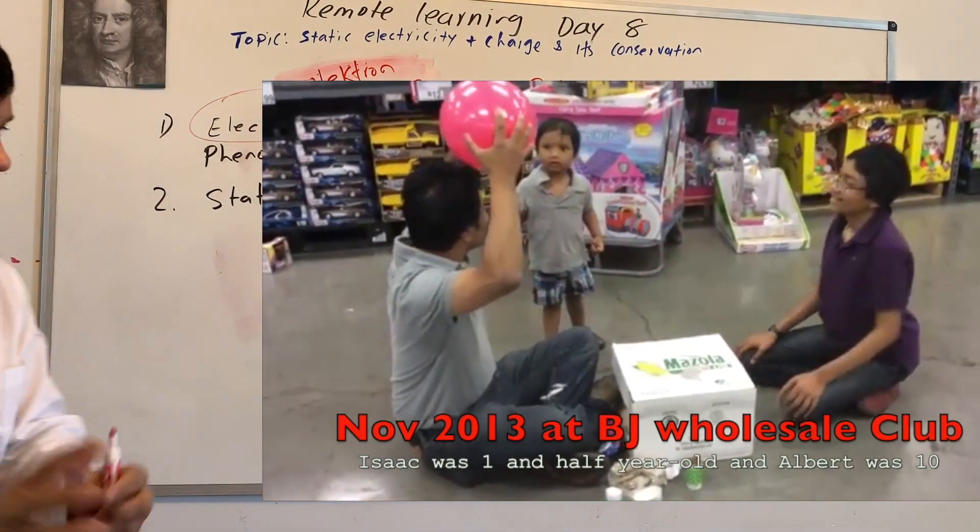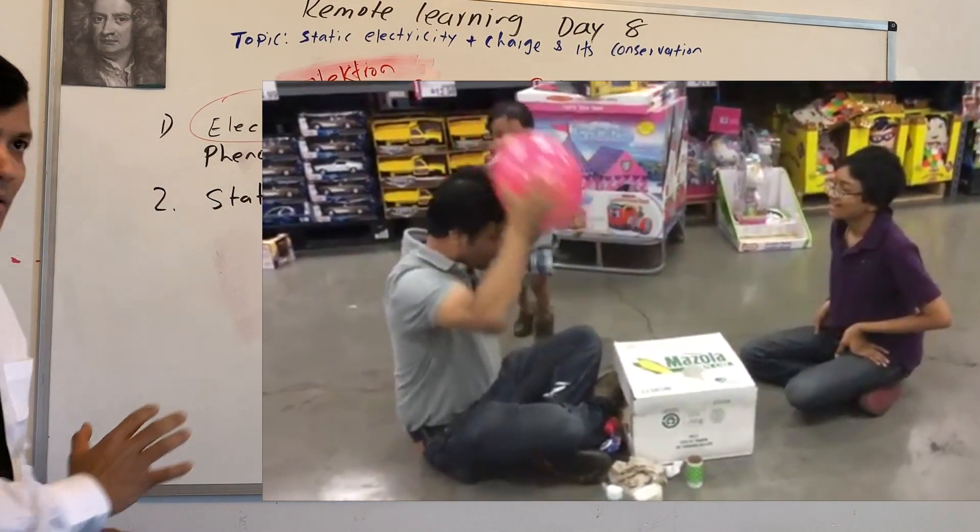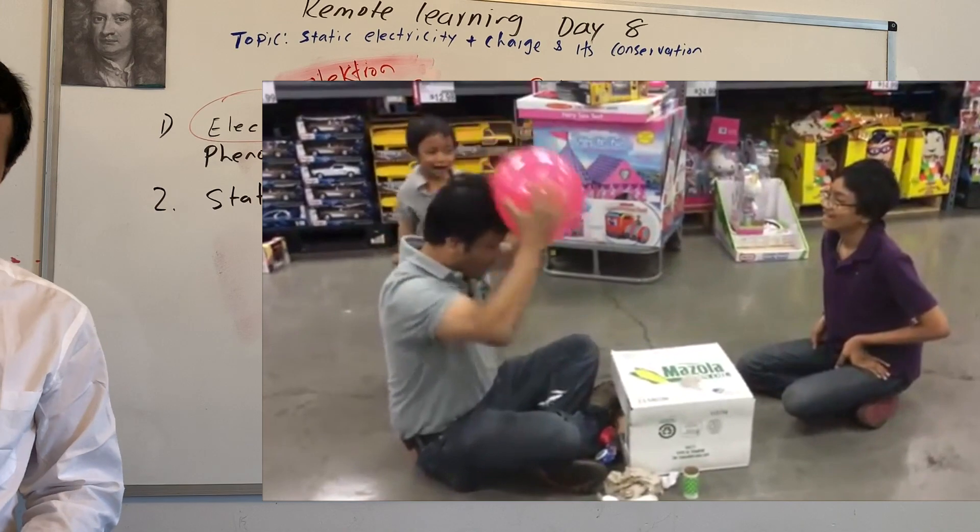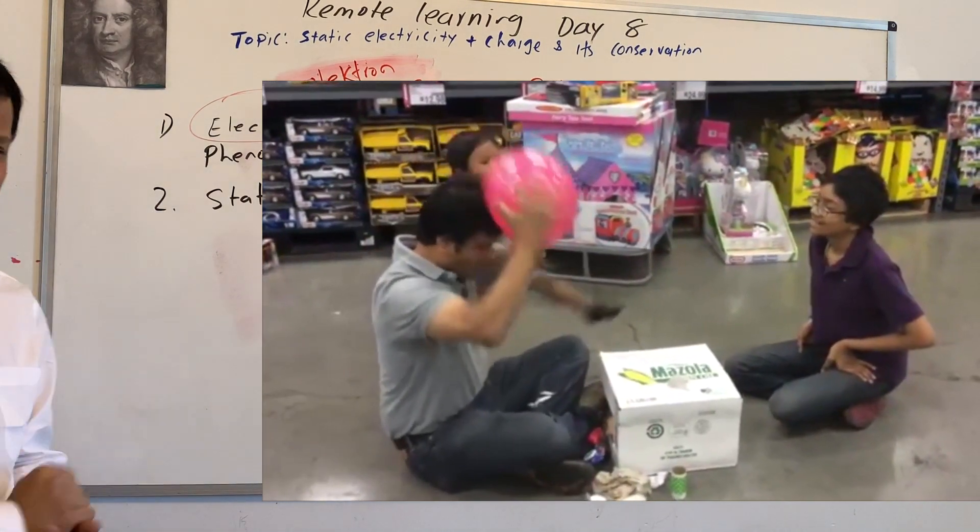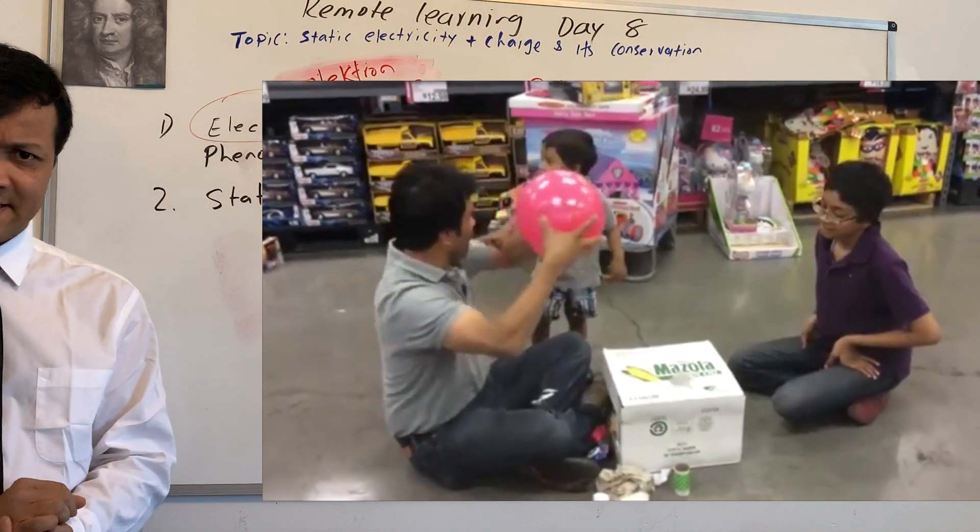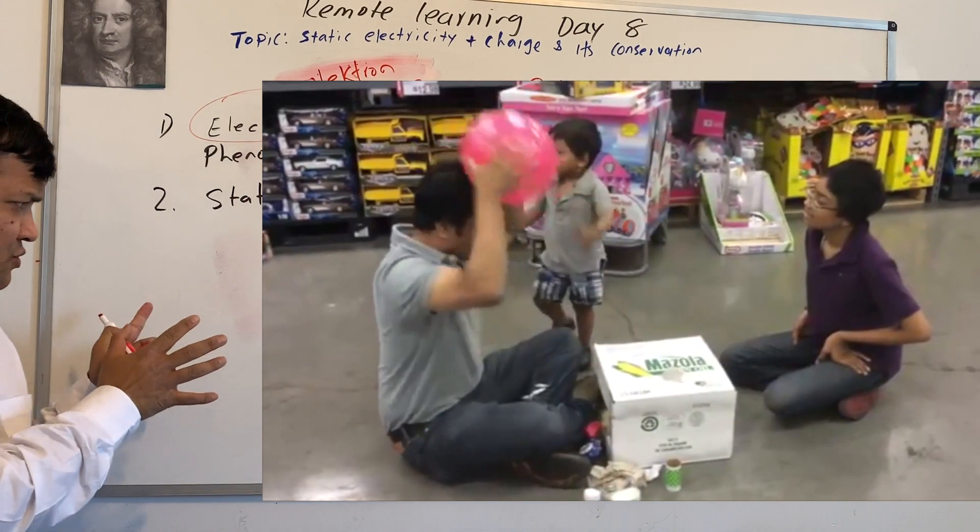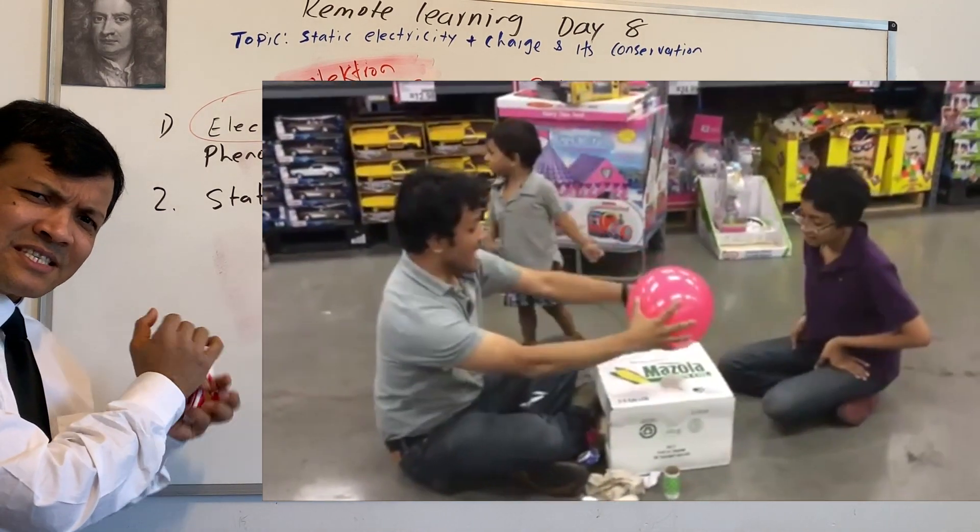What can you do? How can you demonstrate the imbalance of charges on the balloon? Well, if you bring it close to the wall, the balloon will stick to the wall. That's how you can demonstrate that imbalance of charges allows the balloon to stick to the wall.